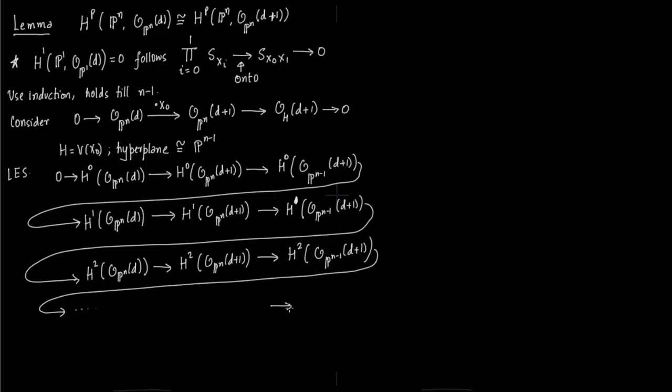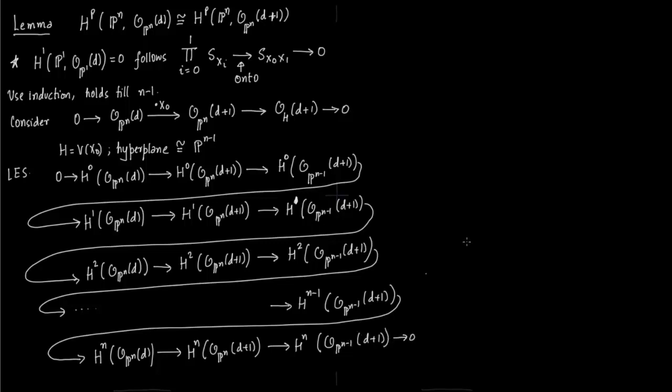So as we go on, yeah, so we go on till n-1. Again for the induction hypothesis we went till n-2. So n-1 is what we have to show, so you have n-1, then finally you reach n. d-1 and then H^n(O_P^(n-1)(d-1)) and 0. Okay now I'm going to with the rust color, these are zero by induction hypothesis.